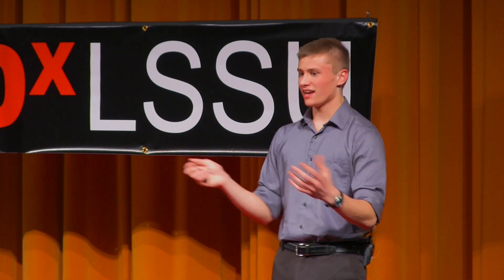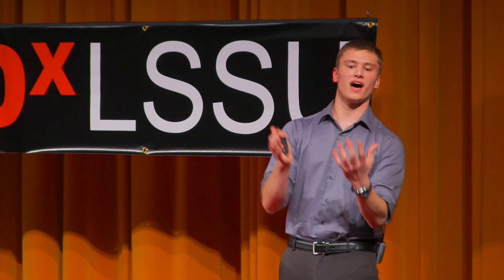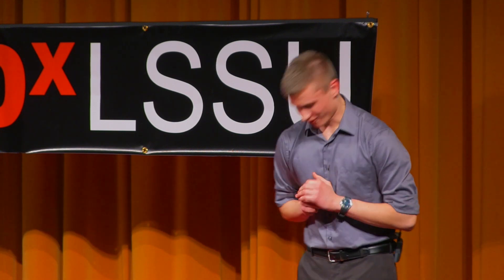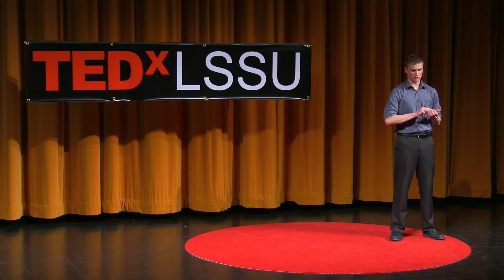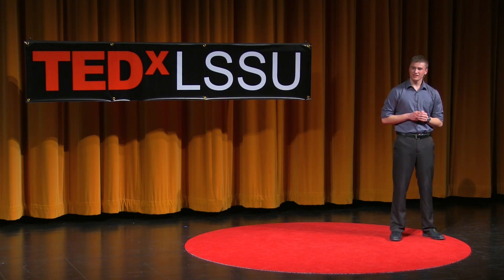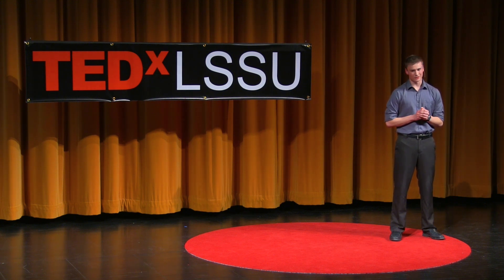That's easier said than done — it took Gauss years to see geometry without the parallel postulate. But you'll have a distinct advantage over Gauss: you have somebody with the perspective you're trying to see sitting across the table from you right now. Ask them questions. Keep an open mind to see their side of the world. Those four steps are powerful because they give any two people — of any cultural, religious, or political background — a method to see the world from someone else's perspective. And seeing the world from someone else's perspective is the first step in reconciling our differences as people, as families, as religions, as cultures, as countries. I think that Gauss gave us a better mathematics, but by using his strategy, we can make a better world. Thank you.